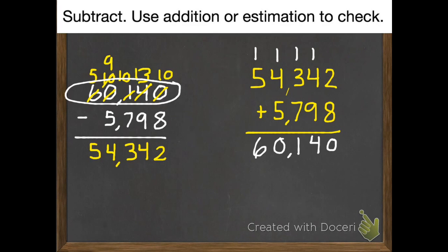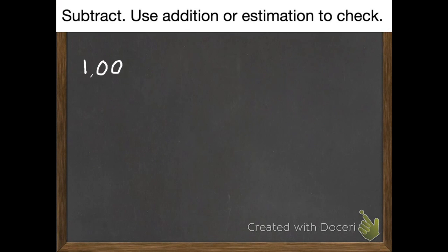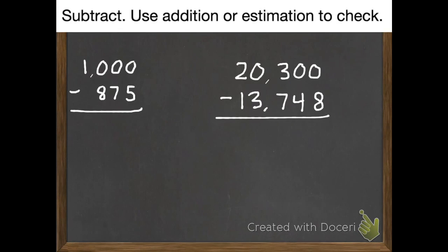So now we're ready for you to do two examples. Your first practice problem is 1,000 subtract 875. Your second practice problem is 20,300 subtract 13,748. Your instructions are the same as we did yesterday and in my examples. Subtract, use addition or estimation to check.